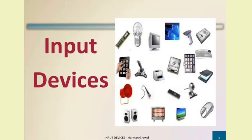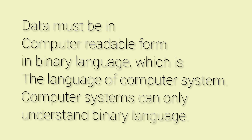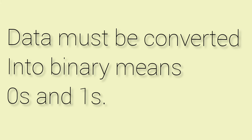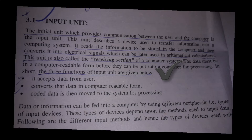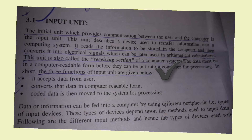The data must become in computer-readable form. Computer language is binary — a computer cannot understand Urdu, English, or Pashto. The data must be converted into zero and one, or binary language. The function of the input unit is: it accepts data from the user, converts the data into computer-readable coded form, and then that coded data is moved to the system for processing.